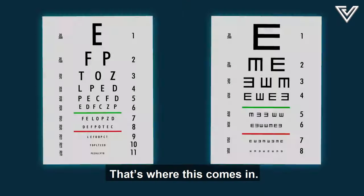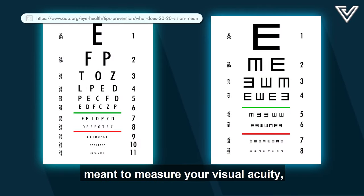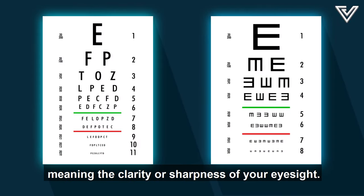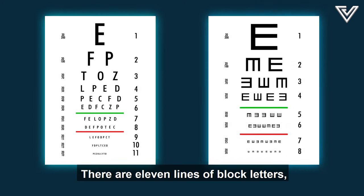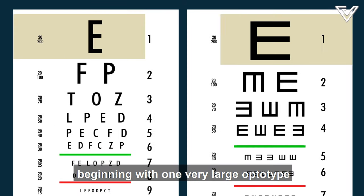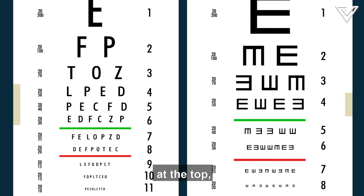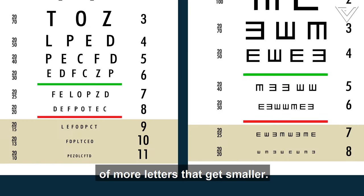That's where this comes in. It's called the Snellen chart, meant to measure your visual acuity, meaning the clarity or sharpness of your eyesight. There are 11 lines of block letters, beginning with one very large optotype or letter at the top, followed by subsequent rows of more letters that get smaller.